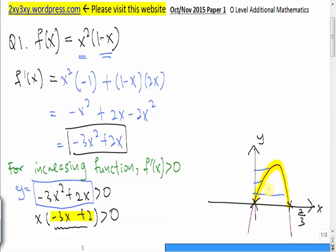So for y to be greater than zero, the x must be in this range. The x must be from zero to two-thirds in order for the graph to be greater than zero. Therefore, x must be between zero to two-thirds.